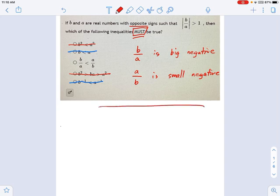Here's a over b. It's a small negative number. Here's b over a. It's a big negative number. Which one is smaller than the other? You would say, oh, well, obviously, b over a is less than a over b. It's more negative. Thank you.